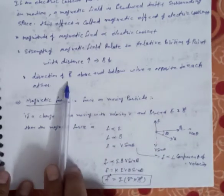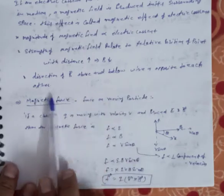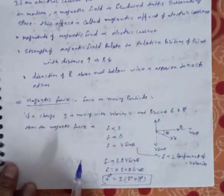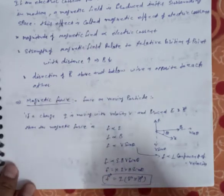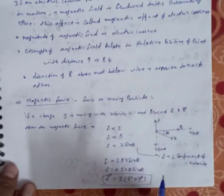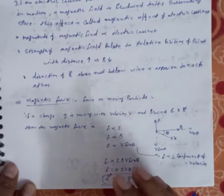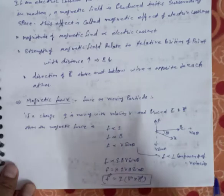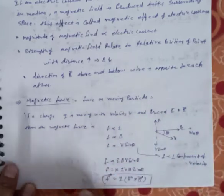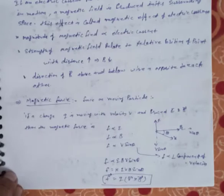The magnetic field above and below the wire is opposite to each other. These are the conclusions of Oersted's experiment — Oersted ne jo prayog kiya uske nishkarsh ye the.